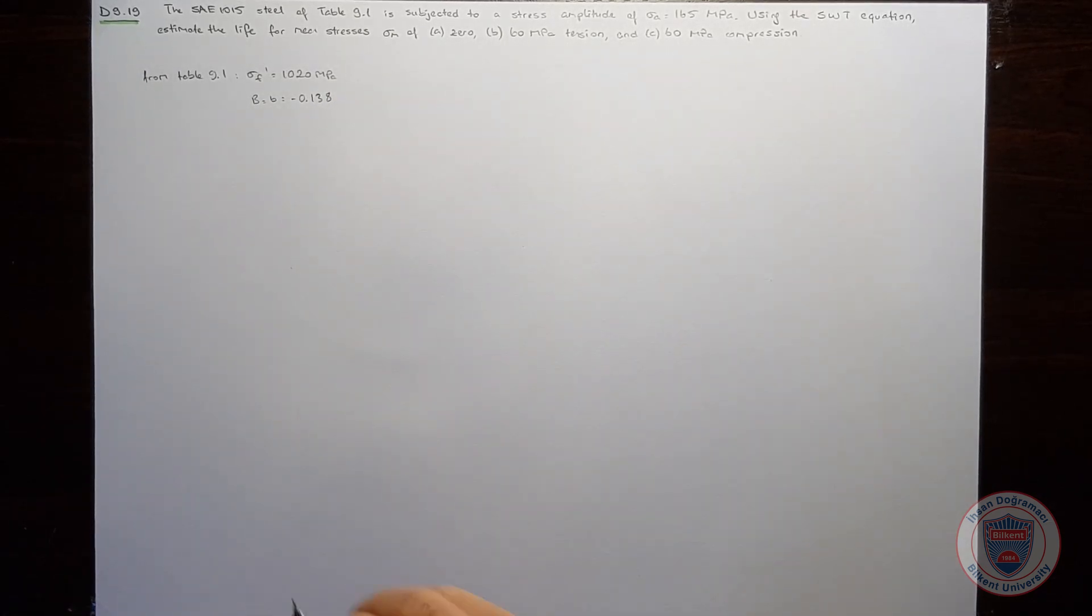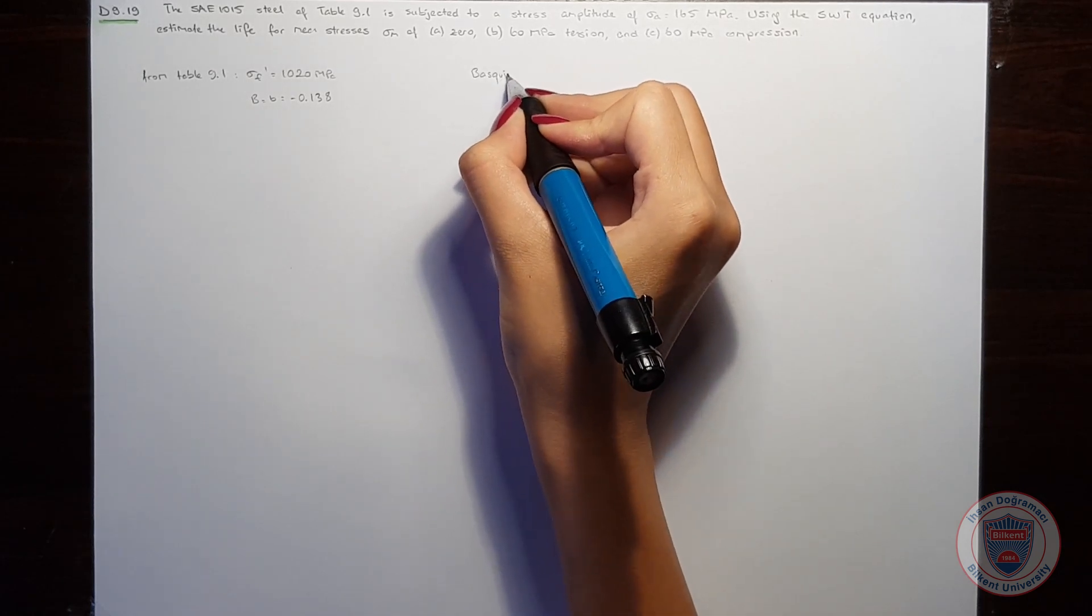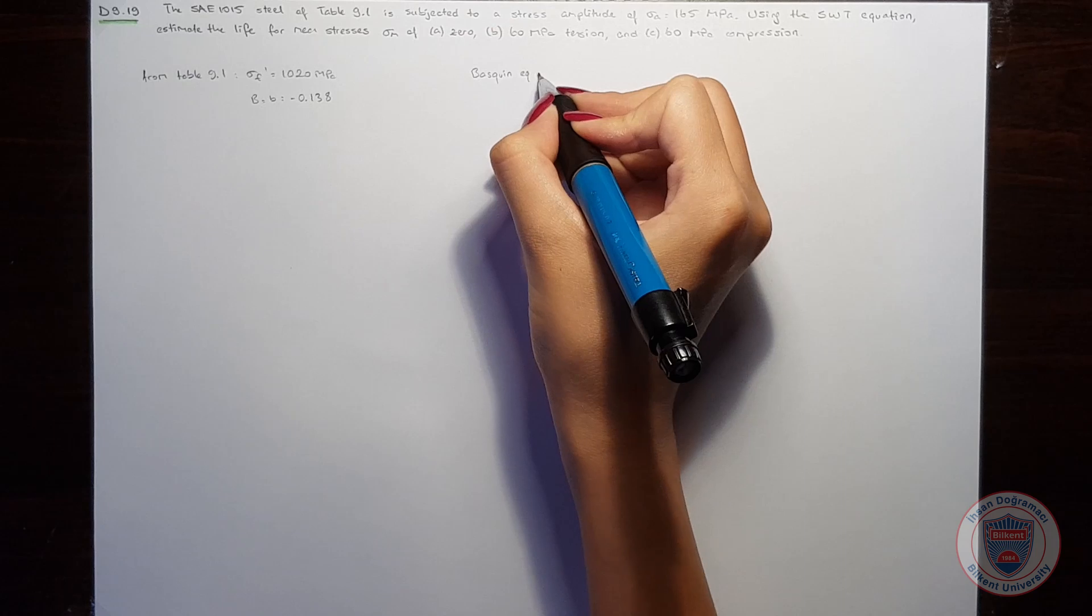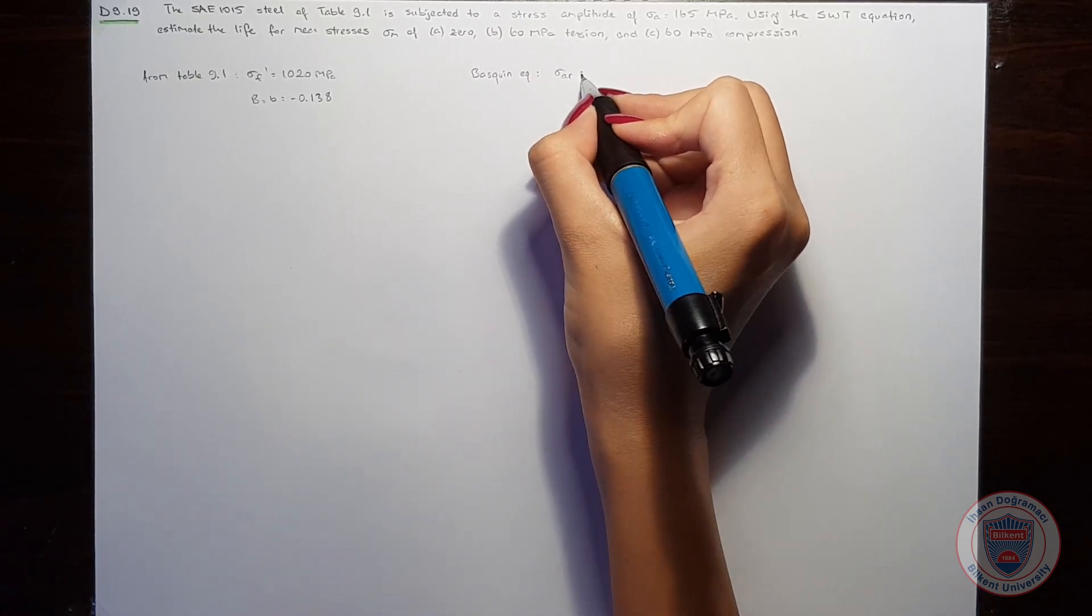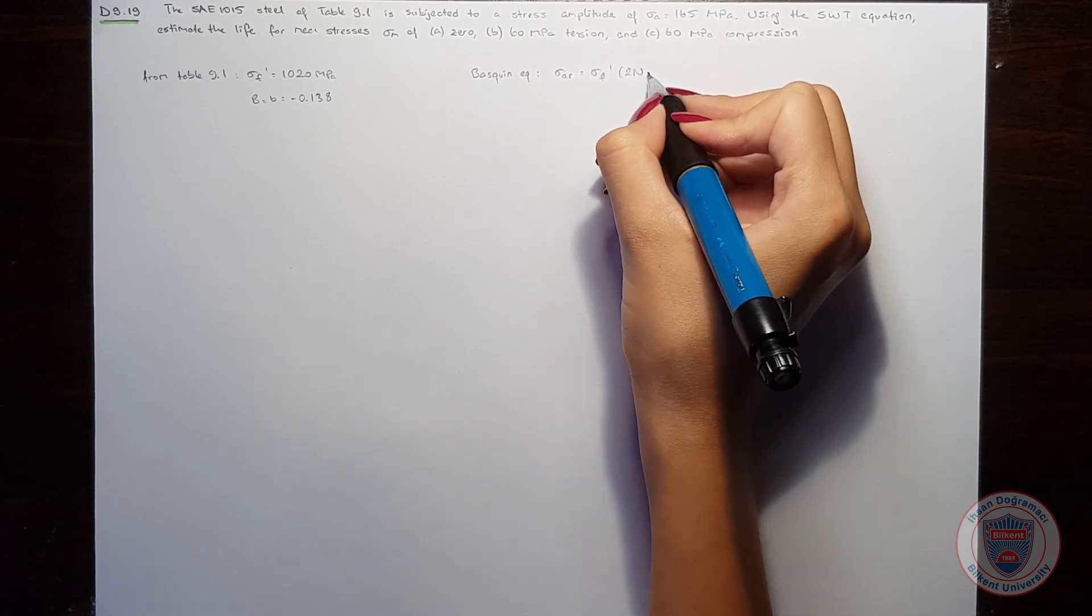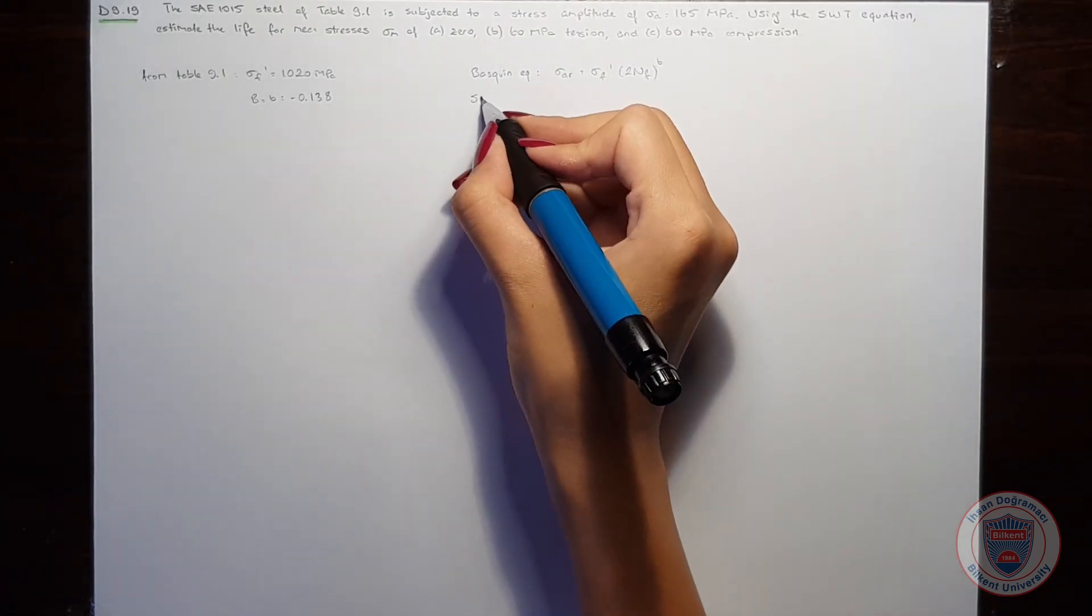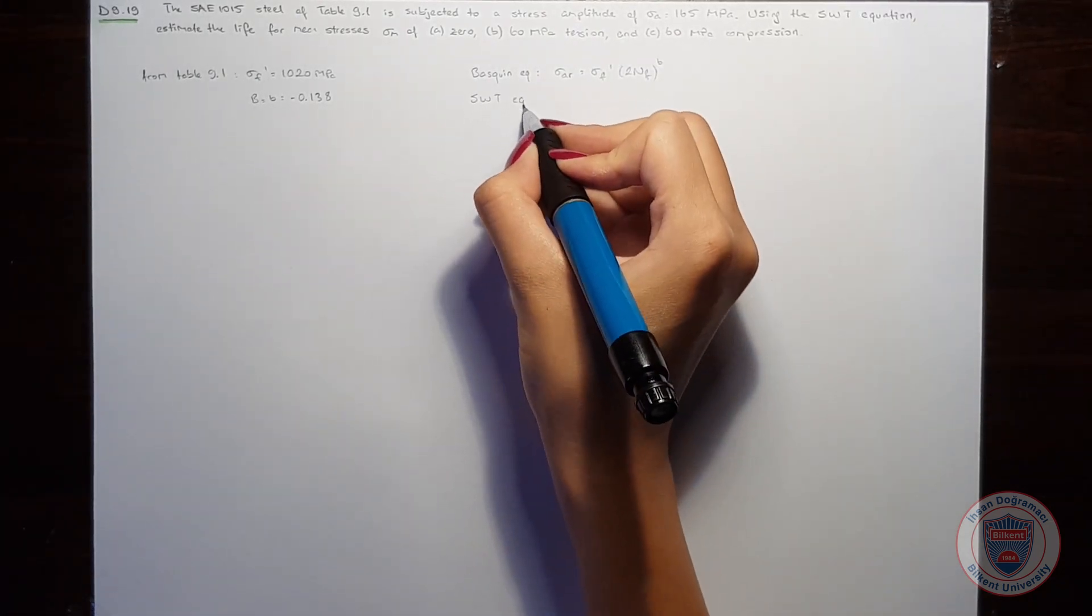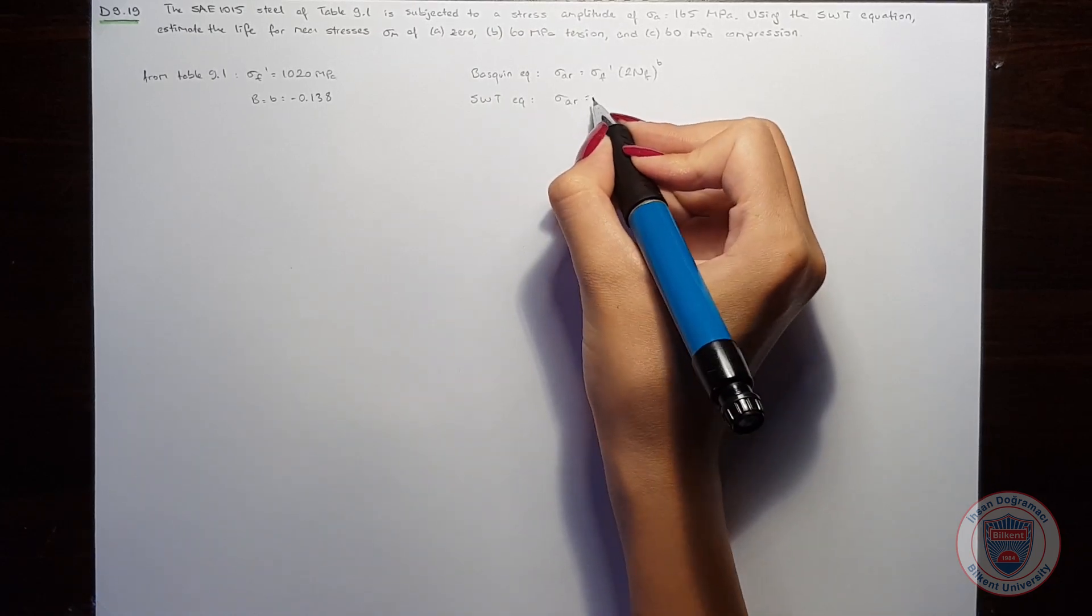Let's write our equations. According to Basquin equation, we know that sigma AR is equal to sigma F prime times 2NF to the power of B. And according to SWT equation, we know that sigma AR is...